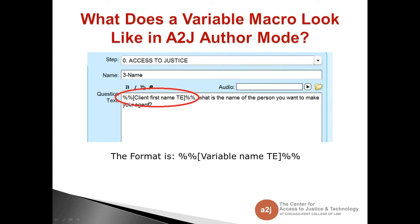As you can see, I have my Variable Macro right here, and the format is: percent sign, percent sign, open bracket, variable name, close bracket, percent sign, percent sign — written as %%[variable name]%%. It's very important to remember when doing Variable Macros to include all of the words exactly as you put them in the variable itself. Capitalize where you've capitalized and order the words correctly. This is how you tell A to J what variable to use and what value to pull in for your interview.